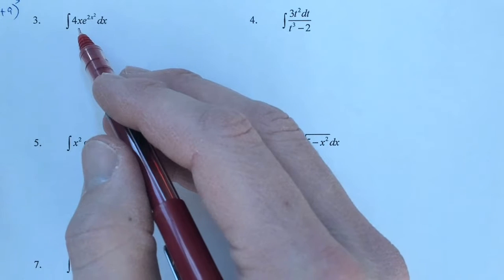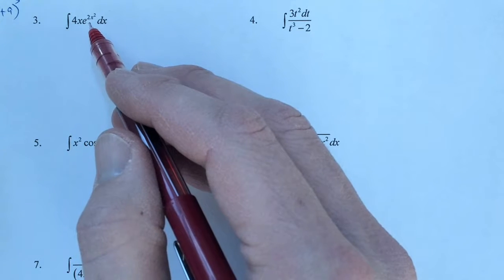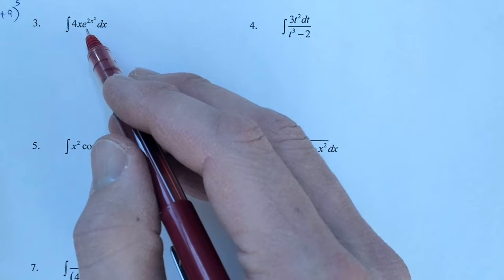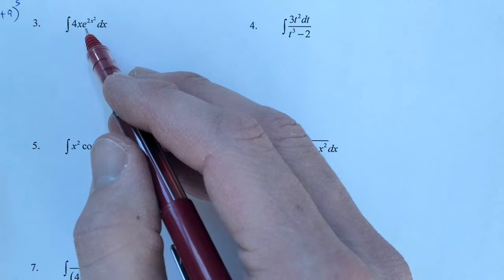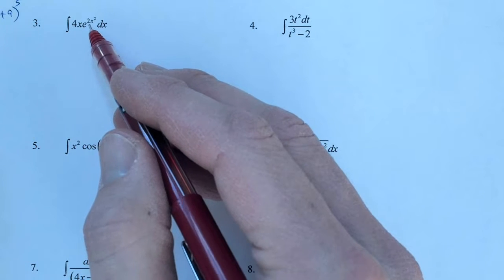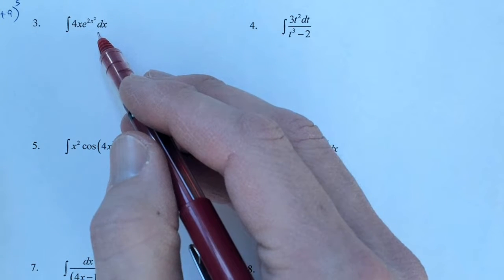With number three, we see 4x times e to the 2x squared. Now we know that e to the x is a nice easy antiderivative. So if we could get e to the u, then that would work as well. But if we have e to the u, we're gonna need a du, not a dx.